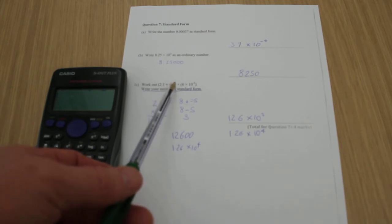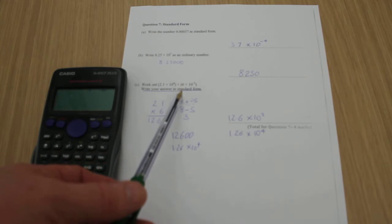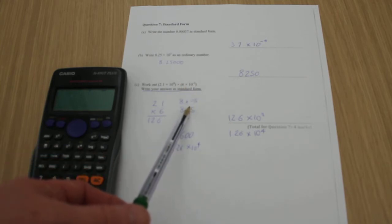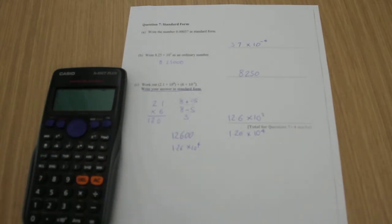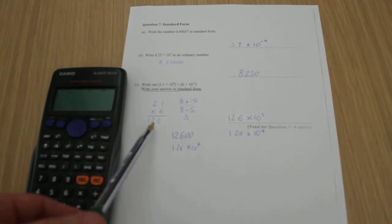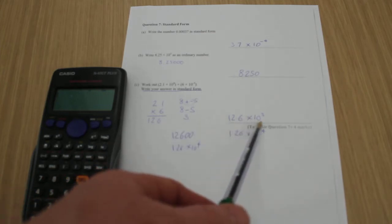I then need to remember that when I multiply standard form, I add the indices. So 8 plus minus 5, which I've written down here. 8 plus minus 5, a plus and a minus makes a minus, so 8 minus 5 is 3. So I've essentially got 12.6 times 10 to the power of 3.